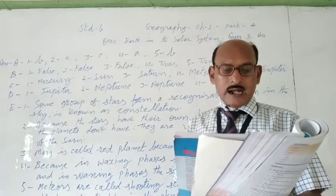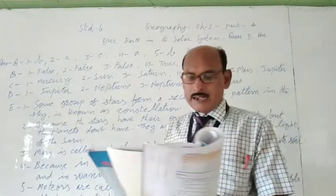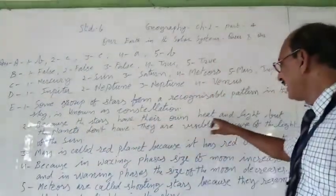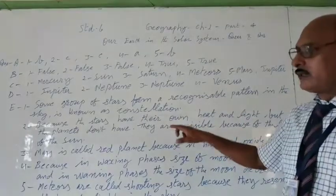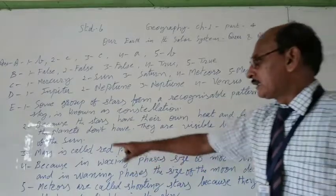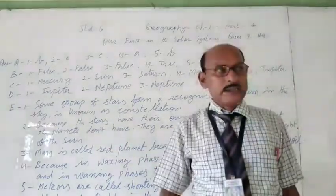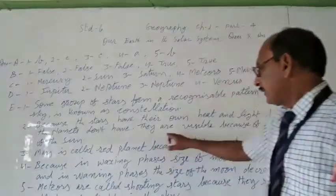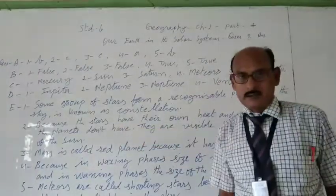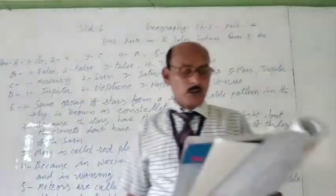Second question, how are the planets different from the stars? So planets are different from the stars because the stars have their own heat and light, but the planets don't have their own heat and light. They are visible because of the light of the stars.